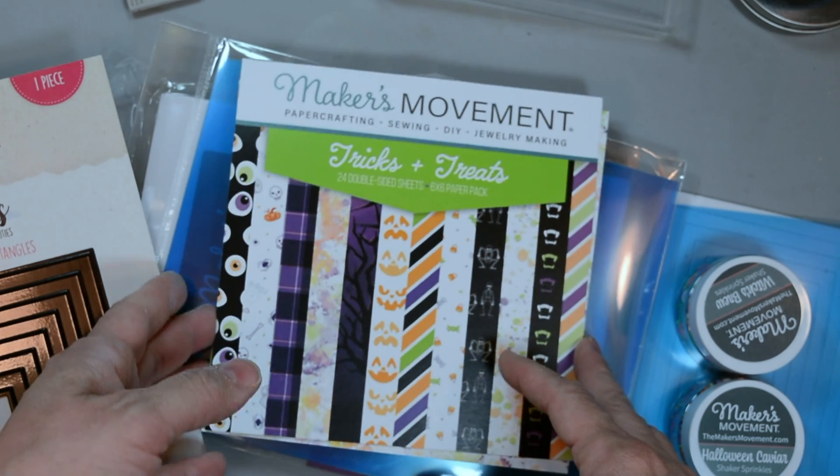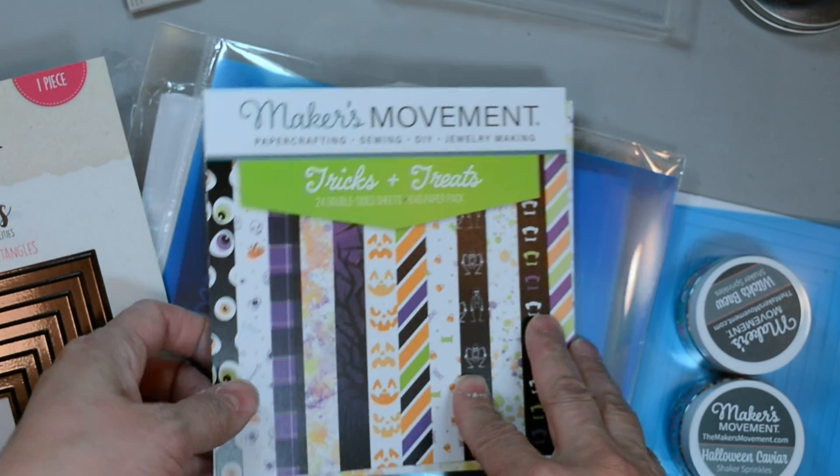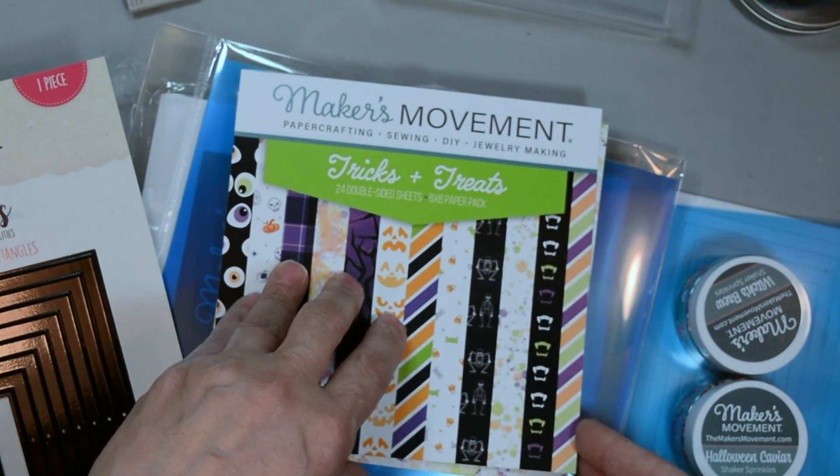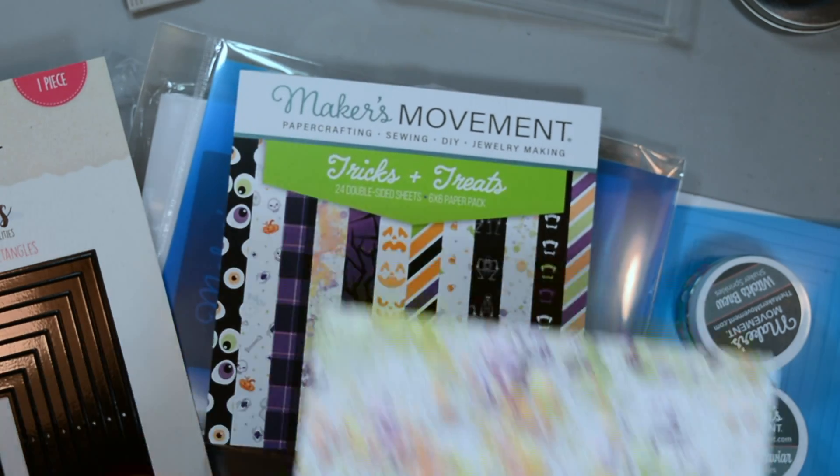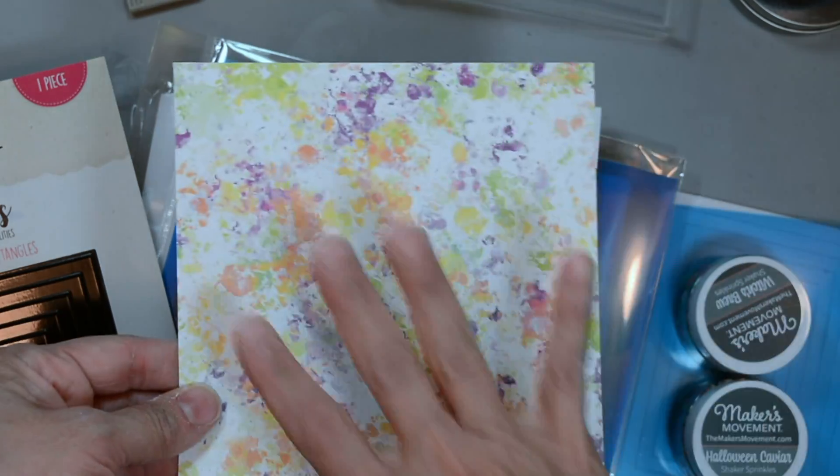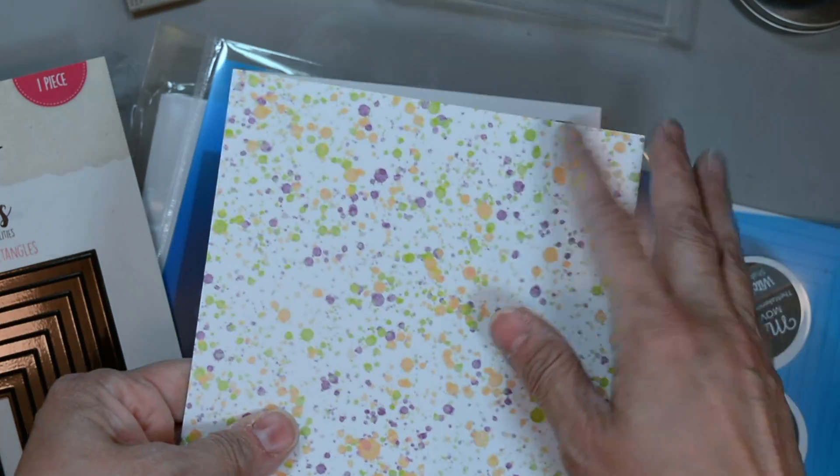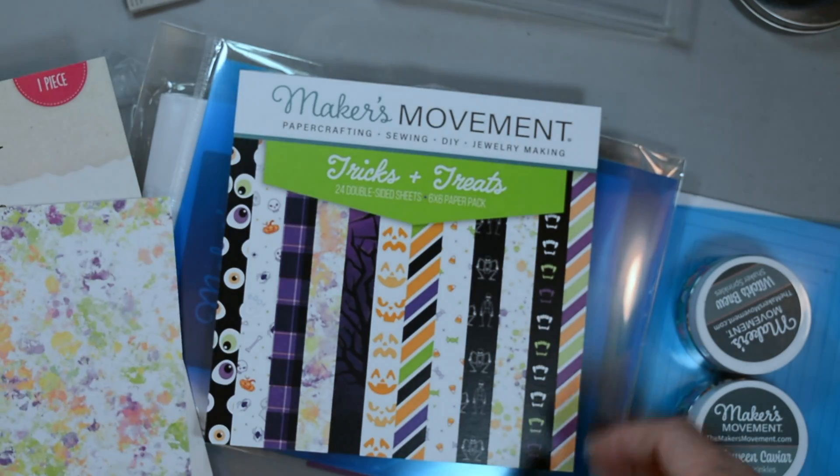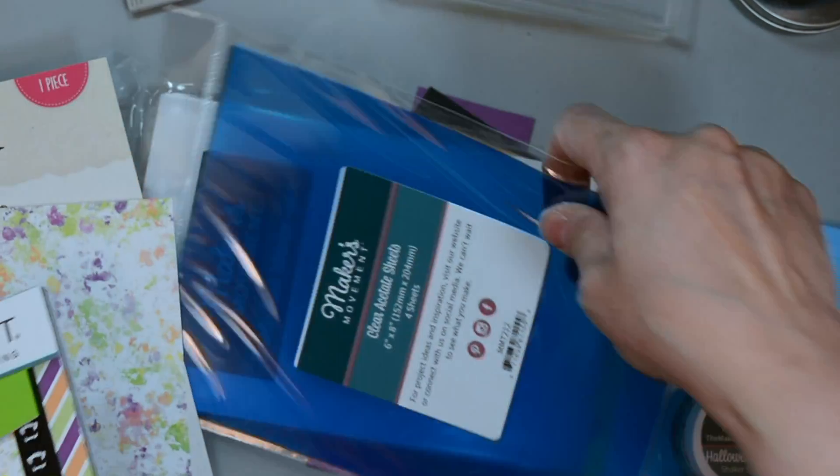New to the Maker's Movement are six by six tricks and treats Halloween paper pad, and I'll be using one of the papers from in here and it's this speckled background with Halloween colors. So you have one side is more watercolor splotchy and the other is more splattered.